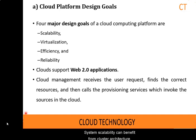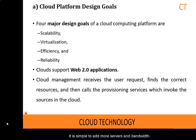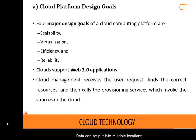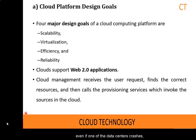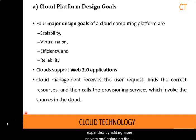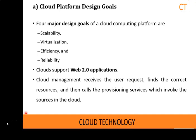The system scalability can benefit from cluster architecture. If one service takes a lot of processing power, storage capacity, or network traffic, it is simple to add more servers and bandwidth. System reliability can also benefit from this architecture — data can be put into multiple locations. For example, user email can be stored on three disks which span geographically separate data centers. Even if one data center crashes, the user data is still accessible. The scale of the cloud architecture can be easily expanded by adding more servers and enlarging network connectivity accordingly.